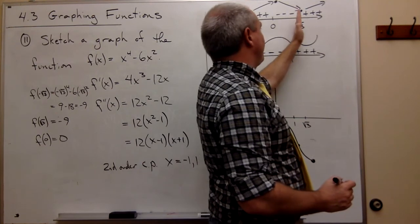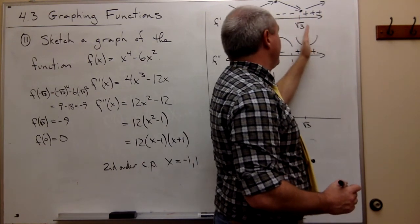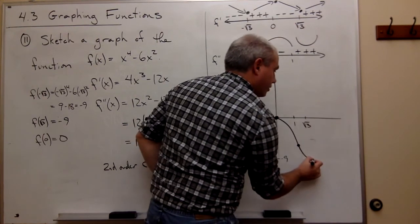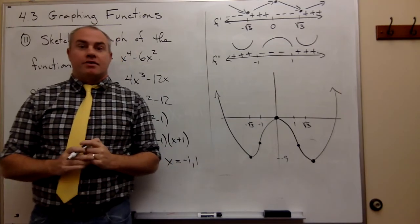And finally, from root 3 to infinity, now I'm still concave up, but I'm going up. So my graph looks something like this.